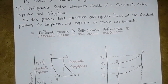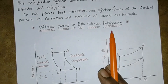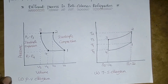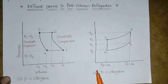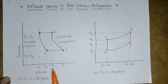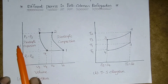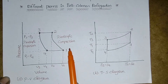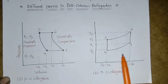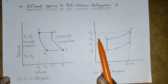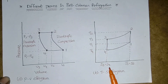Now we will see different processes in Bell-Coleman refrigeration. This is the PV diagram and this is the TS diagram. With these diagrams we will come to know about the different processes in the Bell-Coleman cycle. The points are 1, 2, 3, 4 on the volume-pressure axes. Here is the isentropic expansion and this is the isentropic compression. On the TS diagram also you can see 1, 2, 3, 4 — these are the temperatures T1, T2, T3, T4 — and S3 is equal to S4 and S1 is equal to S2.